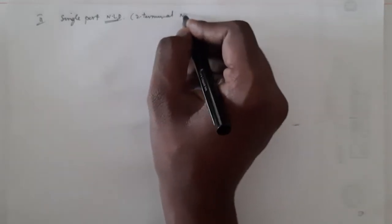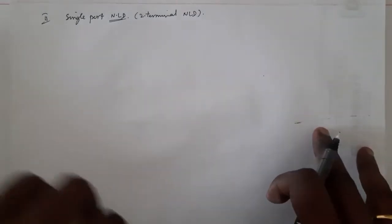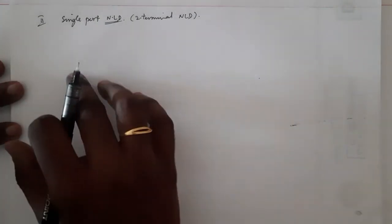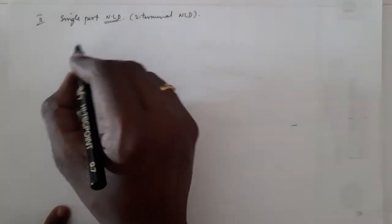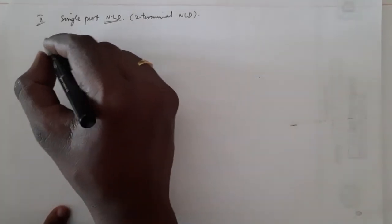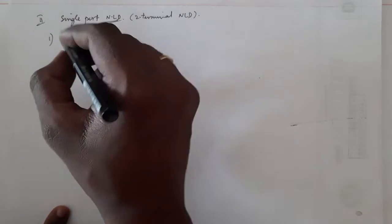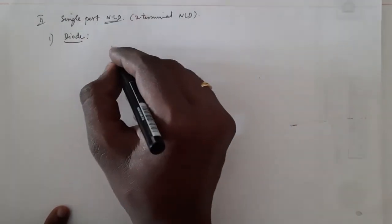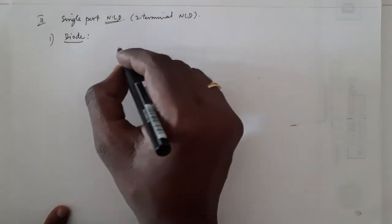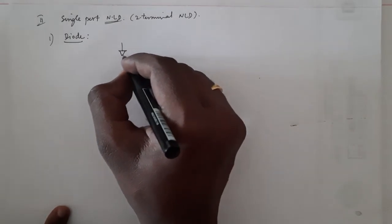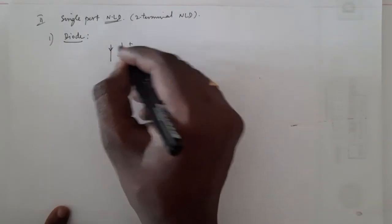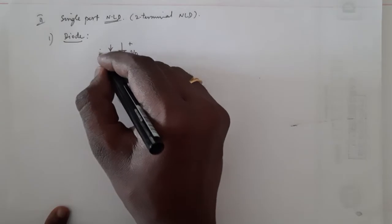These are also called two-terminal nonlinear devices, and we will move on to two-port gradually. The first well-known single-port nonlinear device is a diode. This is the symbol of the diode — VD is the voltage across it and ID is the diode current.